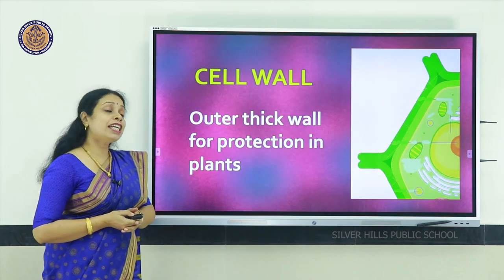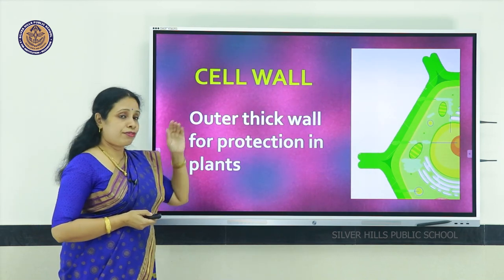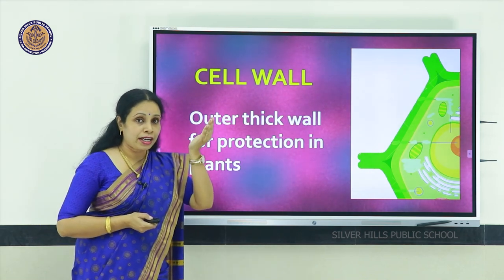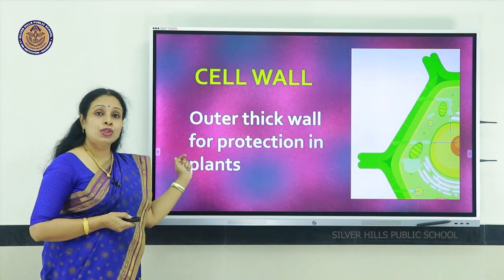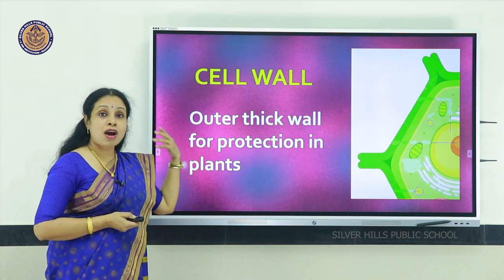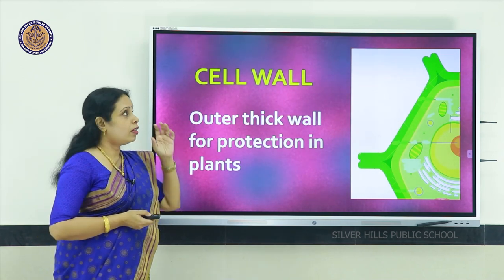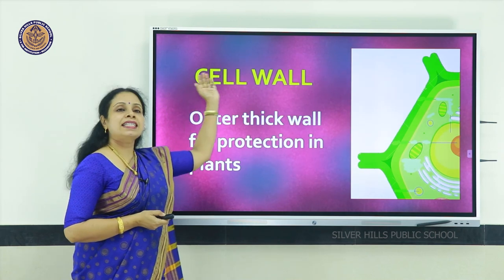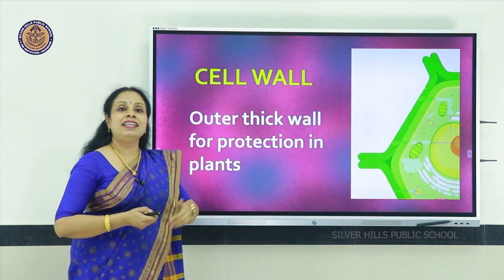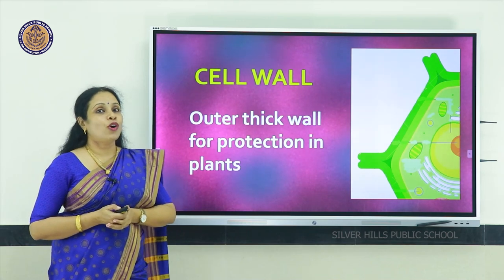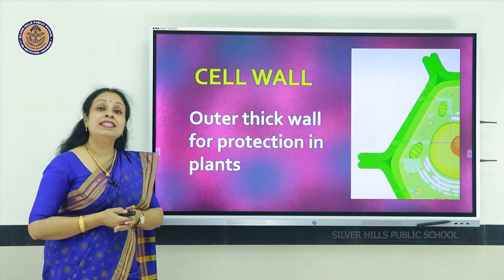In the case of plant cells, outer to the cell membrane there is another thick cell wall made of cellulose, which gives extra protection, rigidity, and shape. You can see in dark green that is the cell wall of plants, made of a material called cellulose.